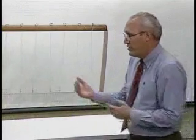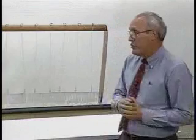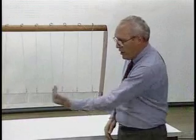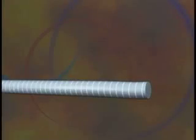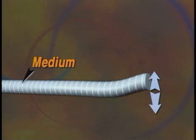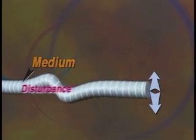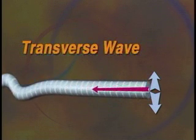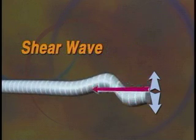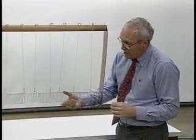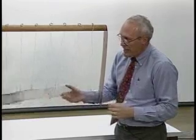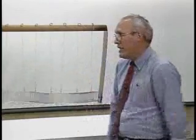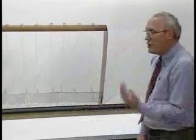There's a second way to create a disturbance that moves along the slinky, and that's to move the medium to the side, rather than moving it along the direction of the disturbance. If the matter of the medium moves back and forth this way, and the disturbance moves that way, so that they're perpendicular to one another, the wave is said to be a transverse wave, or a shear wave. So we can create a wave by moving the medium side to side, with the medium moving back and forth this way, and the disturbance moving in the direction perpendicular to that.